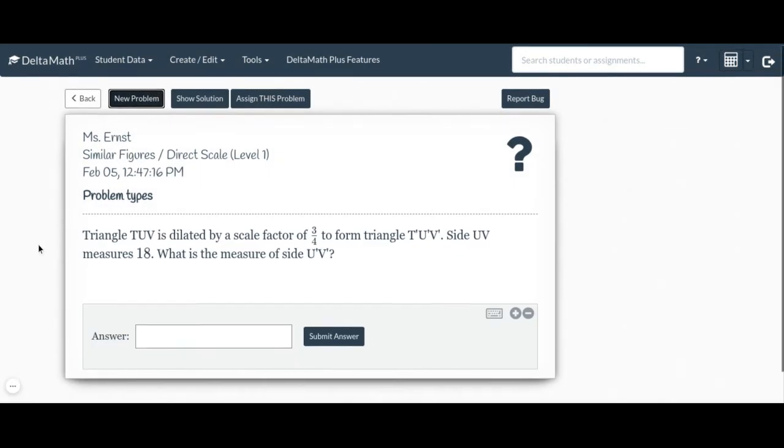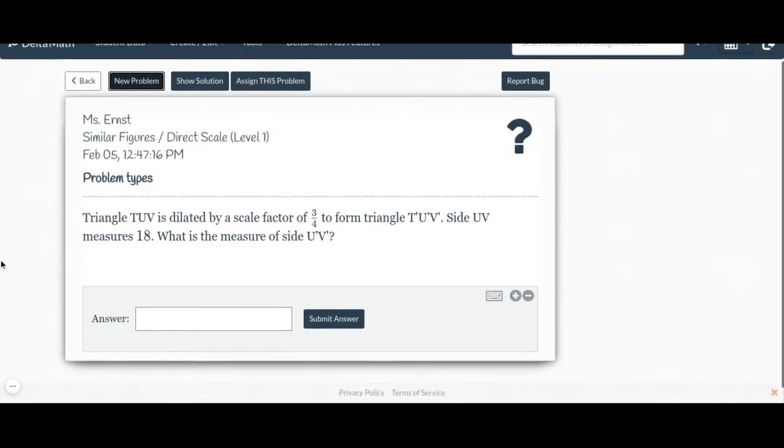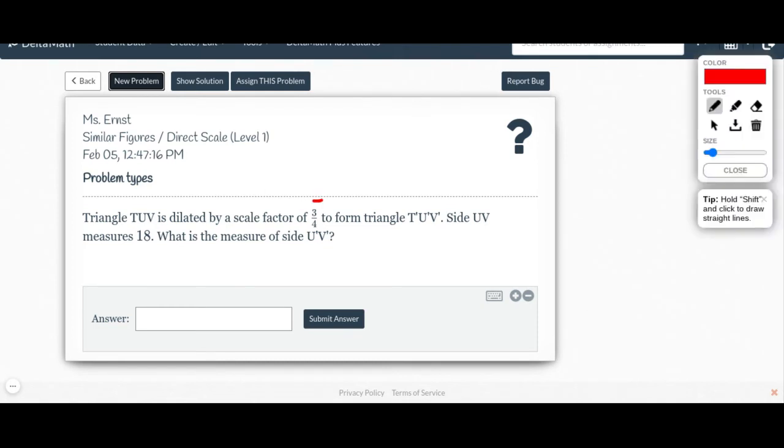This one doesn't have a picture with it, so we might need to draw it out. Triangle TUV is dilated by a scale factor of 3/4, so my scale factor is 3/4, to form triangle TUV prime. Side UV measures 18, and what's the measure of side UV prime? Now it doesn't really matter how we draw this, we're just drawing it to get a general idea of what's going on.